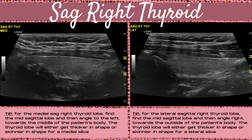Next, image the medial and lateral segments of the sagittal lobe. For the medial sagittal right thyroid, find the mid-sagittal lobe and then angle to the left towards the middle of the patient's body — the lobe will get either thicker or skinnier. For the lateral sagittal right thyroid, find the mid-sagittal lobe and angle right towards the outside of the patient's body. Everyone's lateral and medial slices are a little different, so there's variation in thickness. The important thing is to ensure you're angling the correct direction away from the midline.